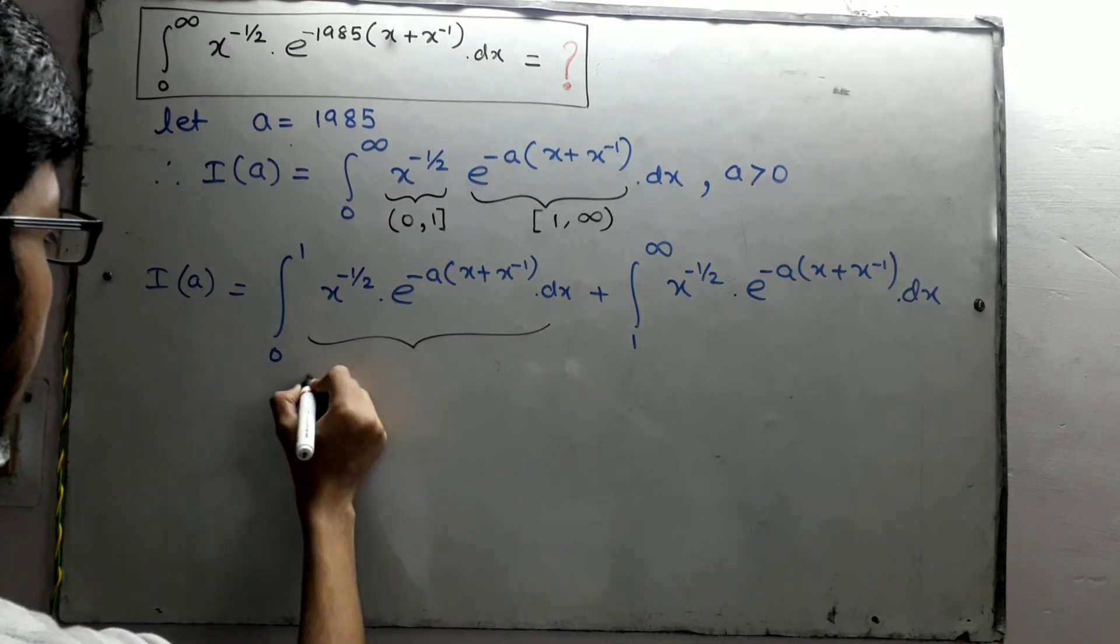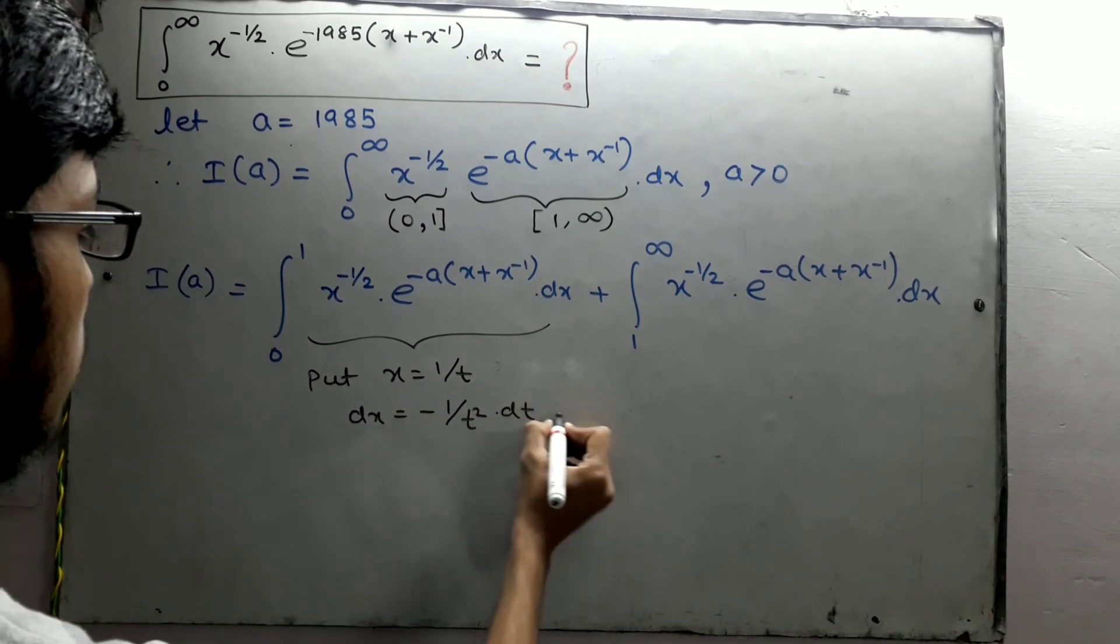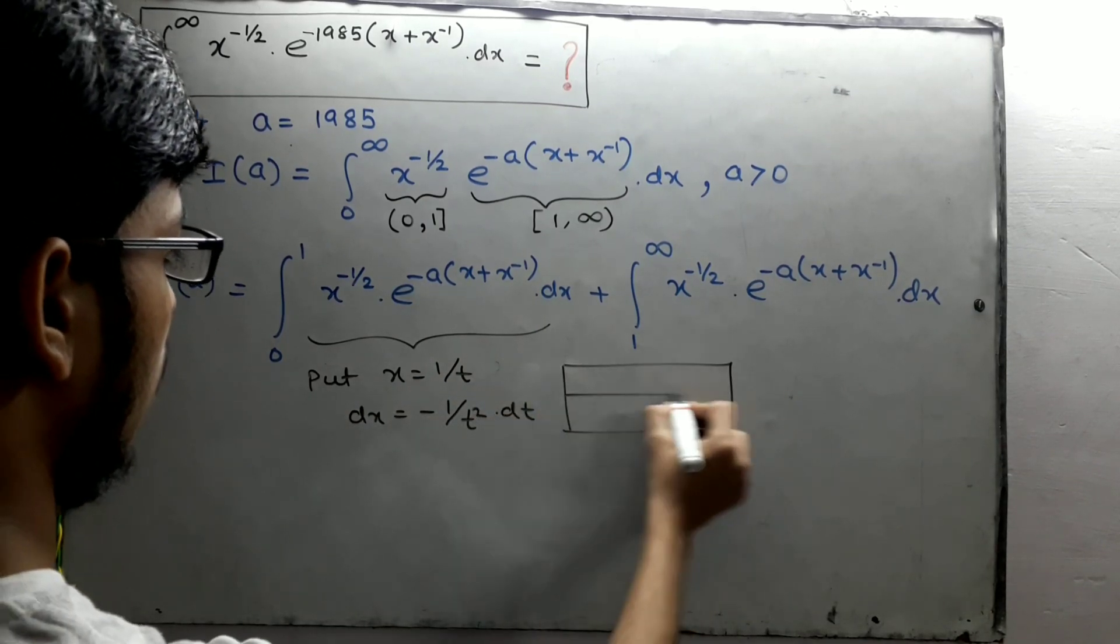Now in the first integral, put x equals 1 upon t. Then dx will be minus 1 upon t square dt, and limit from infinity to 1.